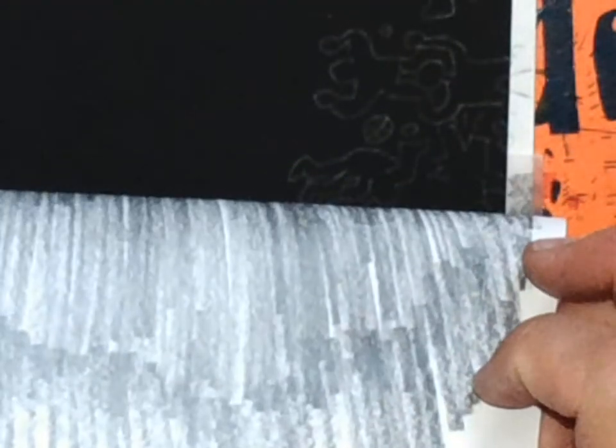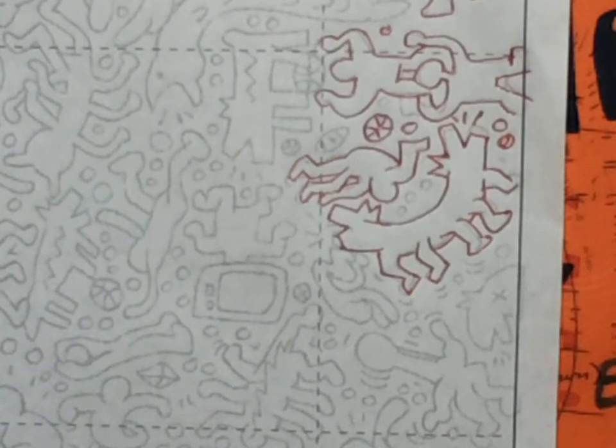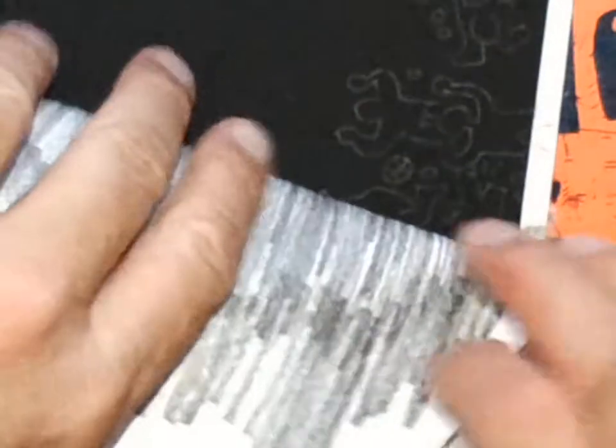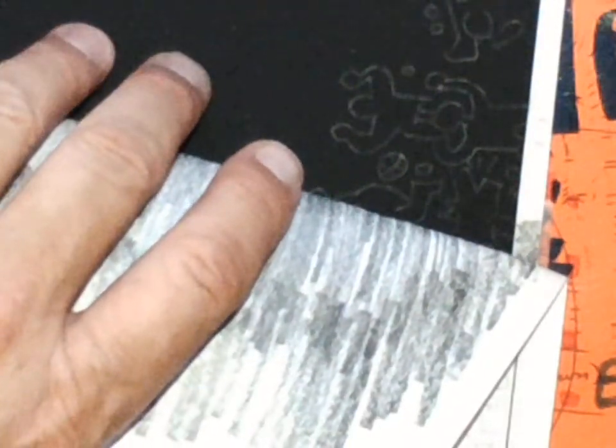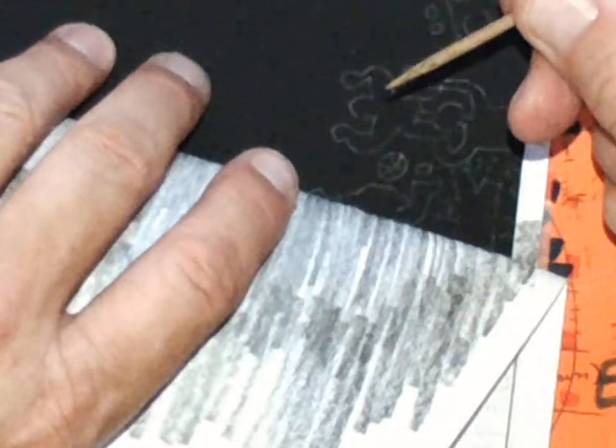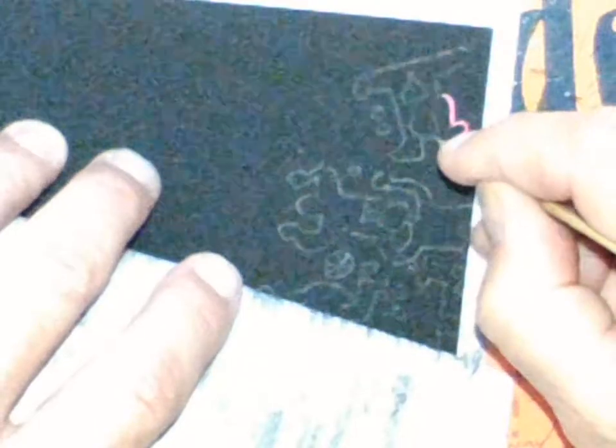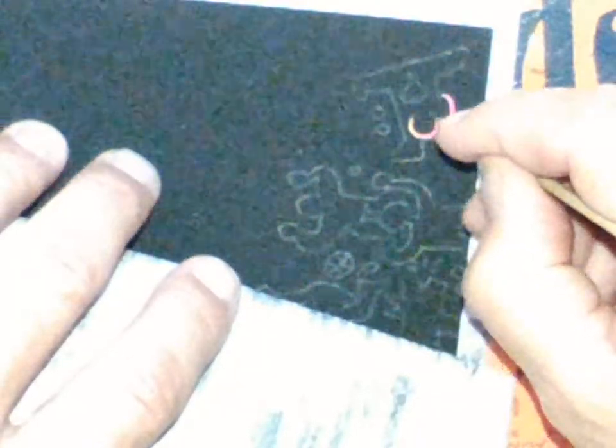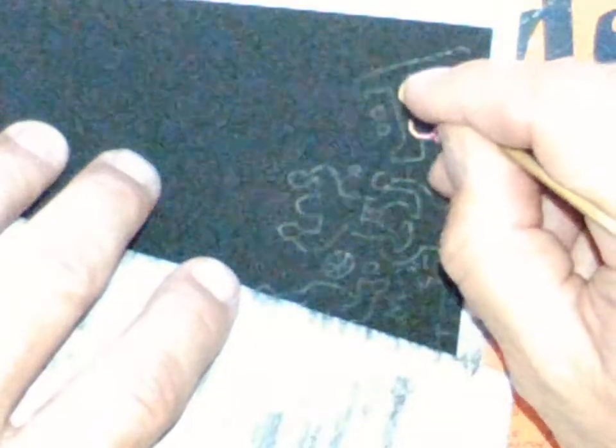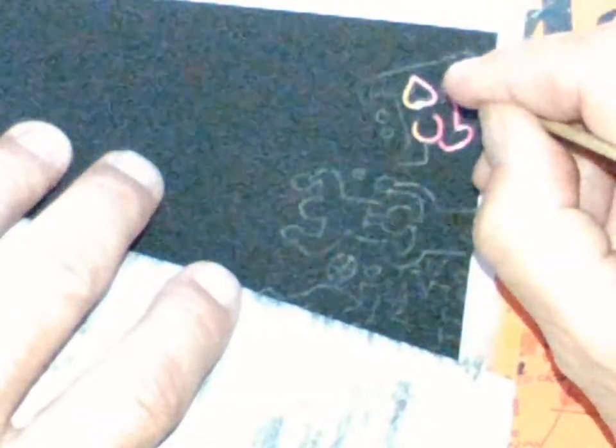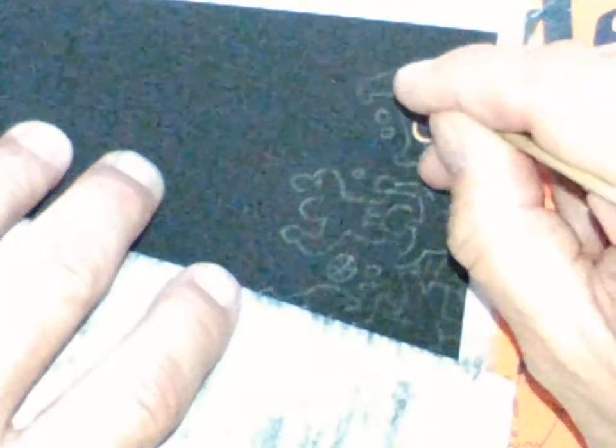So after I've completed all of this and they've transferred to here, the next step is going to be to scrape away these lines. So I'm just going to do this one part so that you can see. I'm using a skewer, this is for shish kebab. I'm just going to start scraping away where I've drawn. Now I haven't transferred this whole thing yet, I just wanted to show you what the next step was, so that you can see what the whole process looks like.